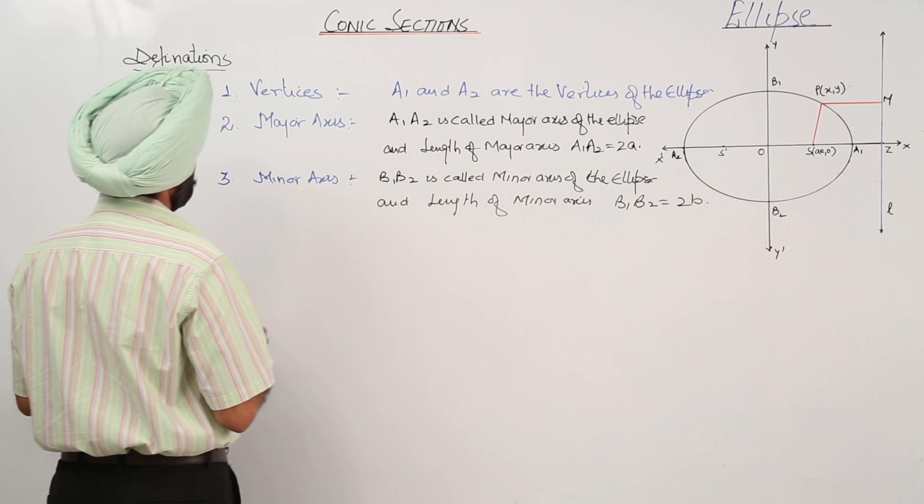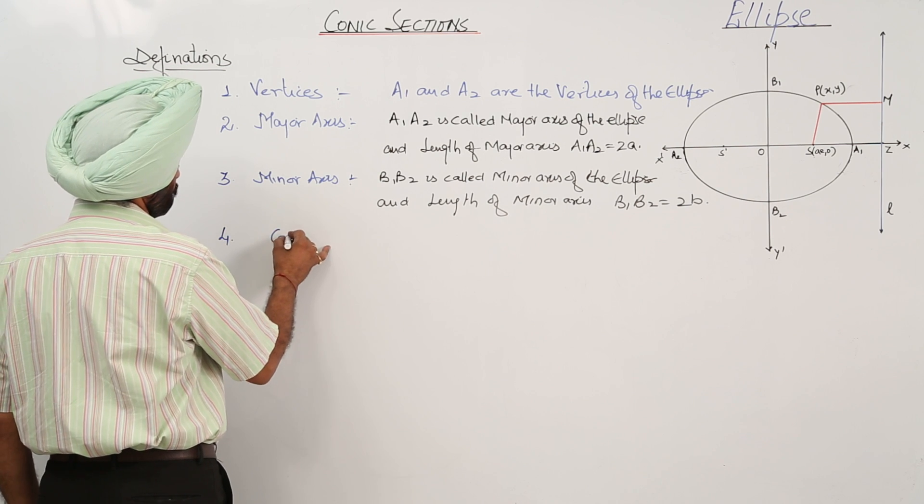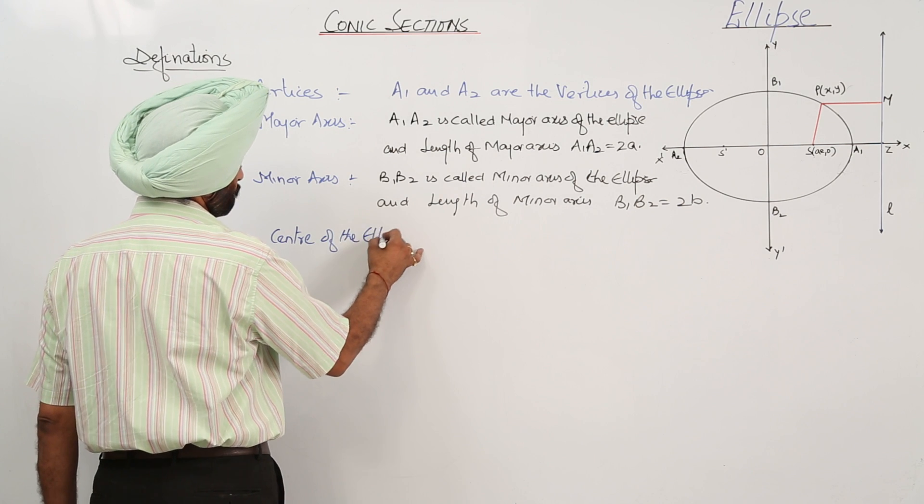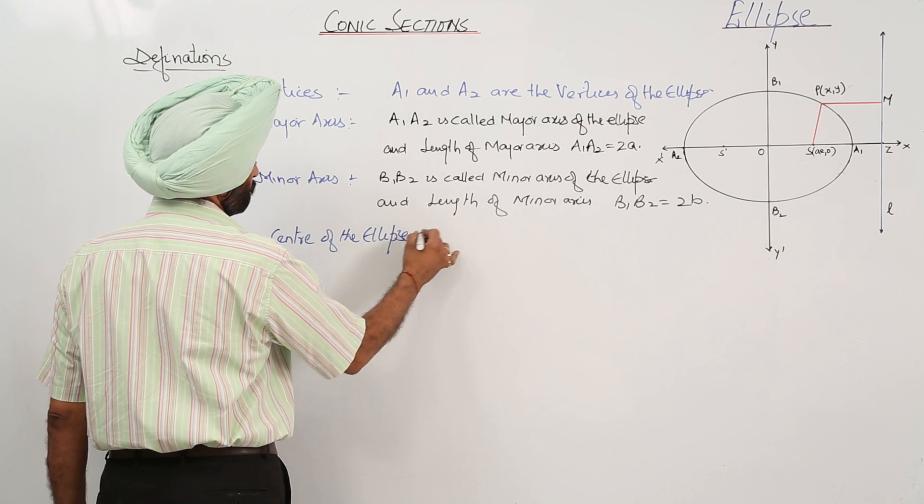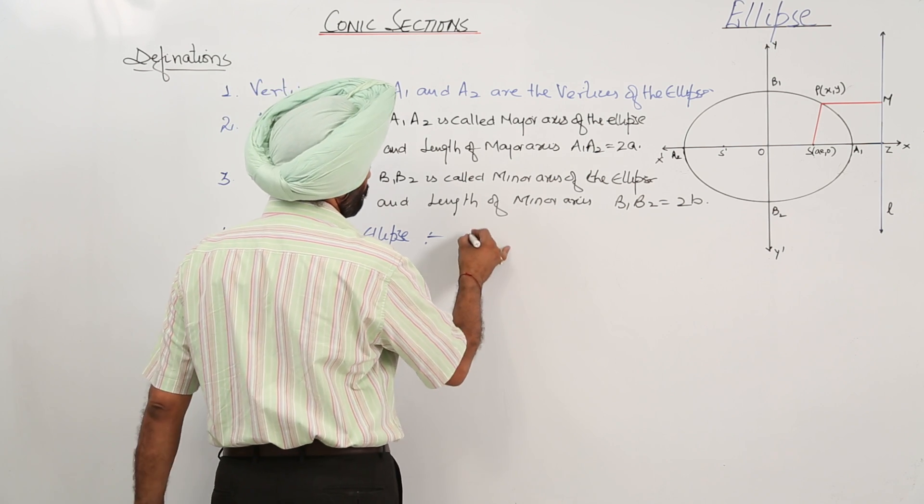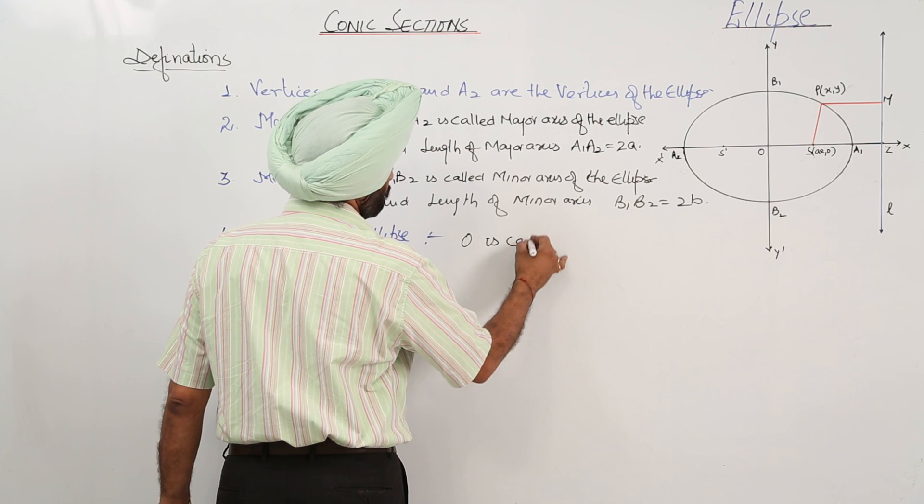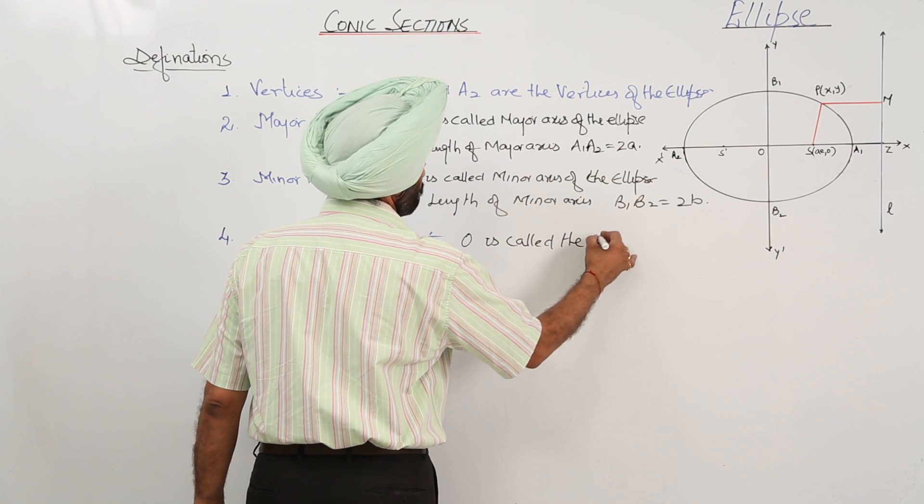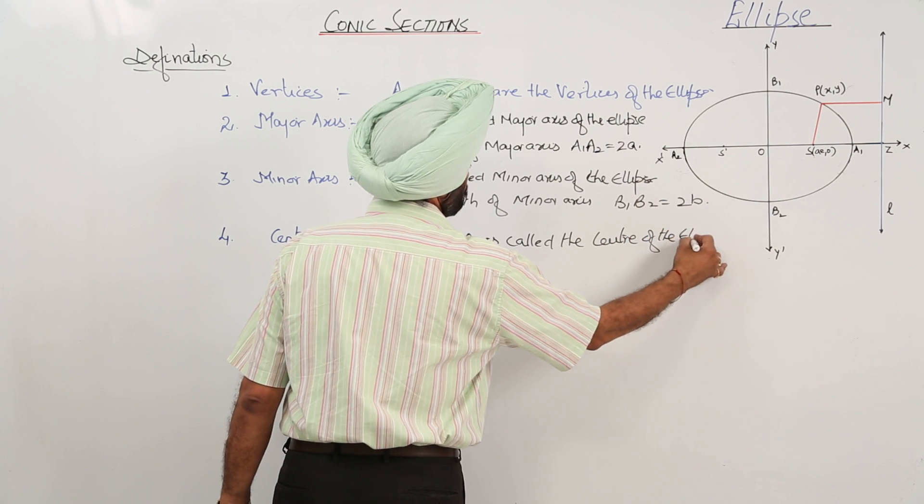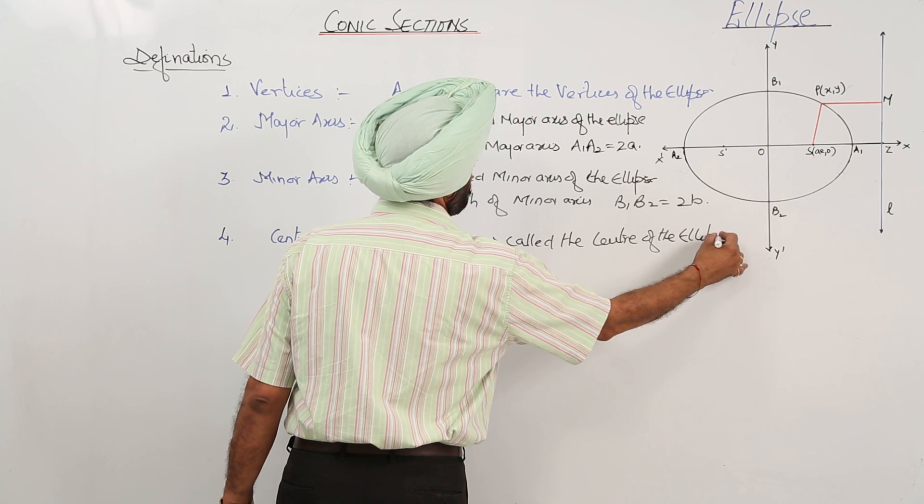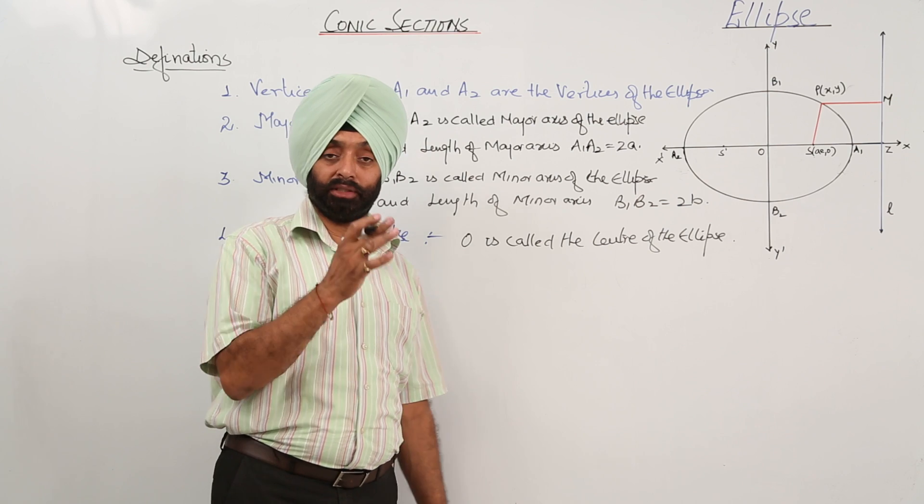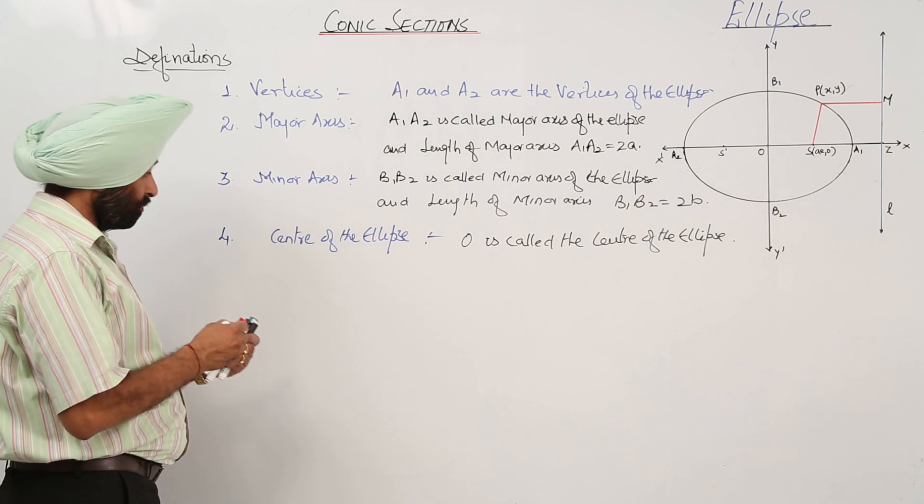Number 4, center of the ellipse. O is called the center of the ellipse, or we can write it where major axis and minor axis meets that is called the center of the ellipse.